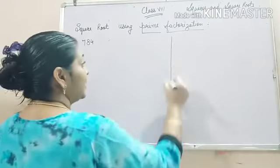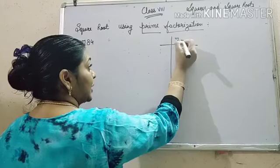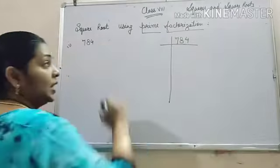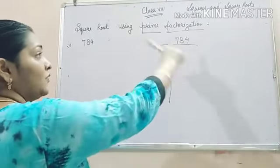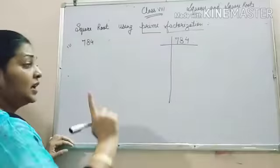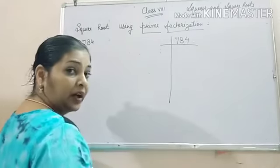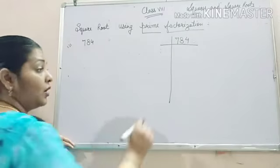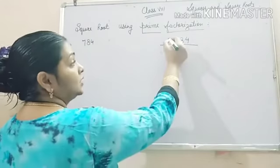You very well know what is the method prime factorization. That means we have to divide 784 with the prime factors till we get the remainder 0 or in the end we get 1.